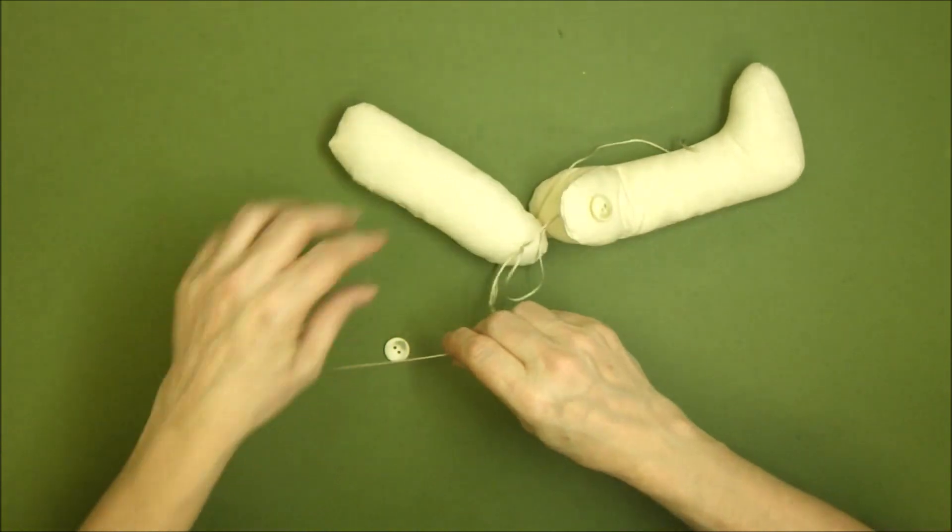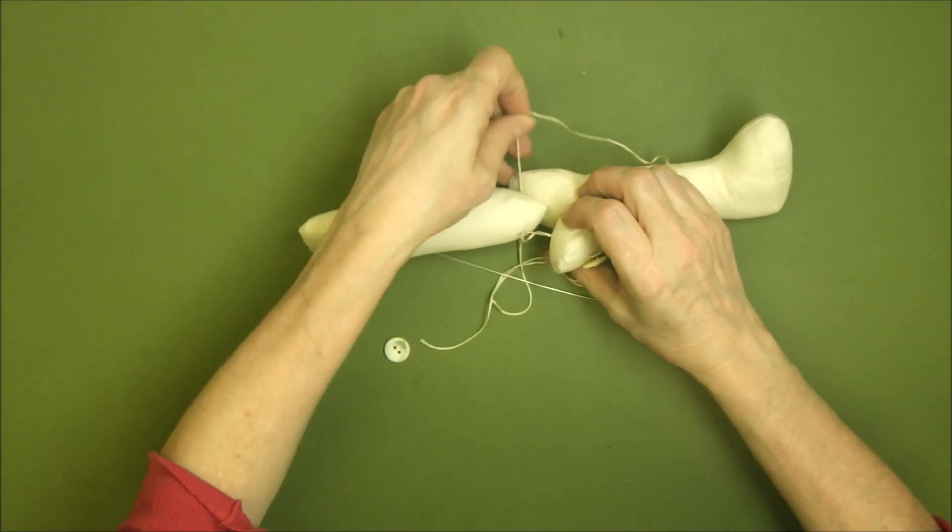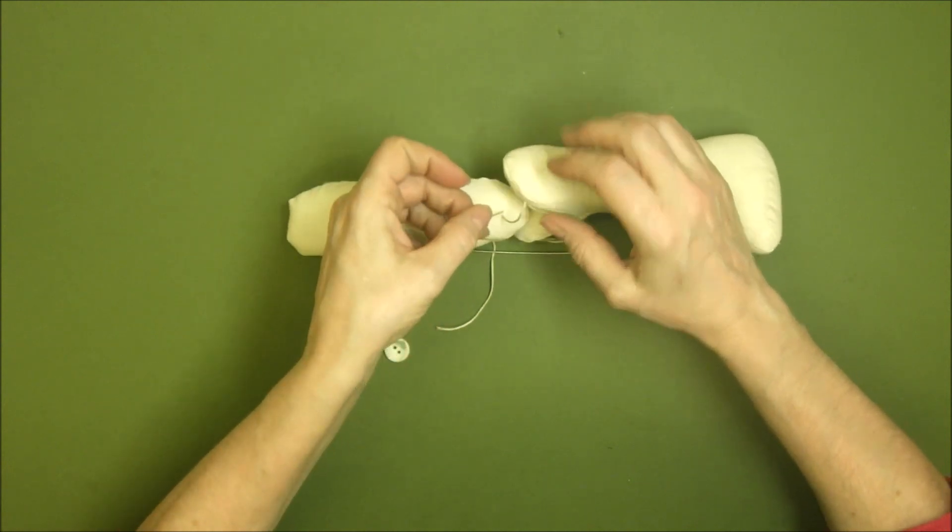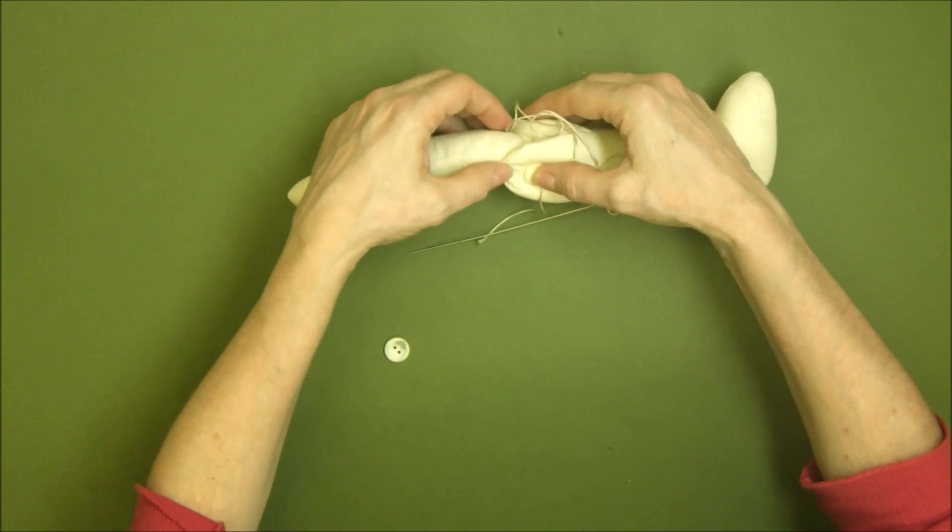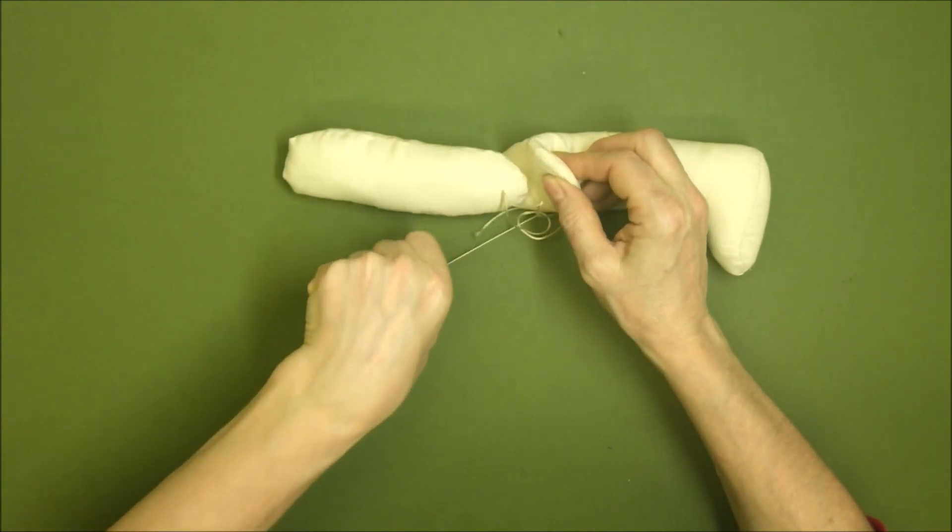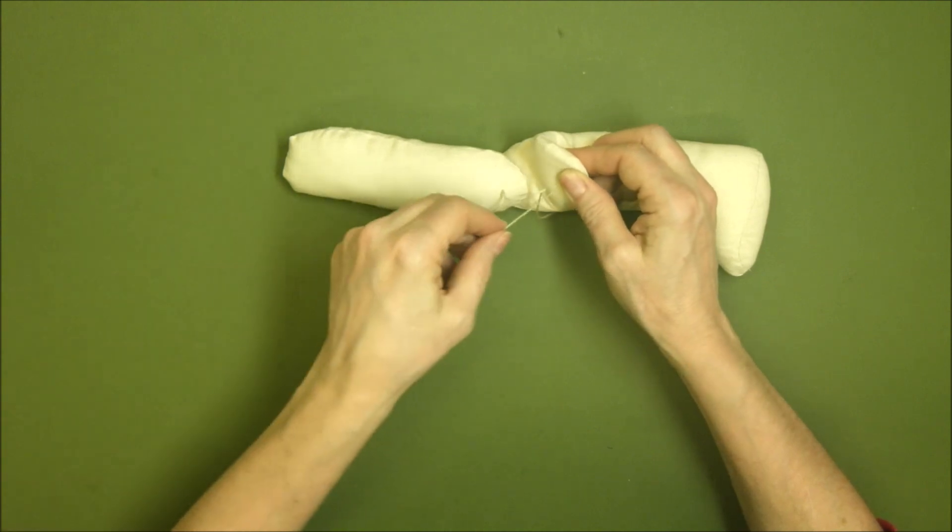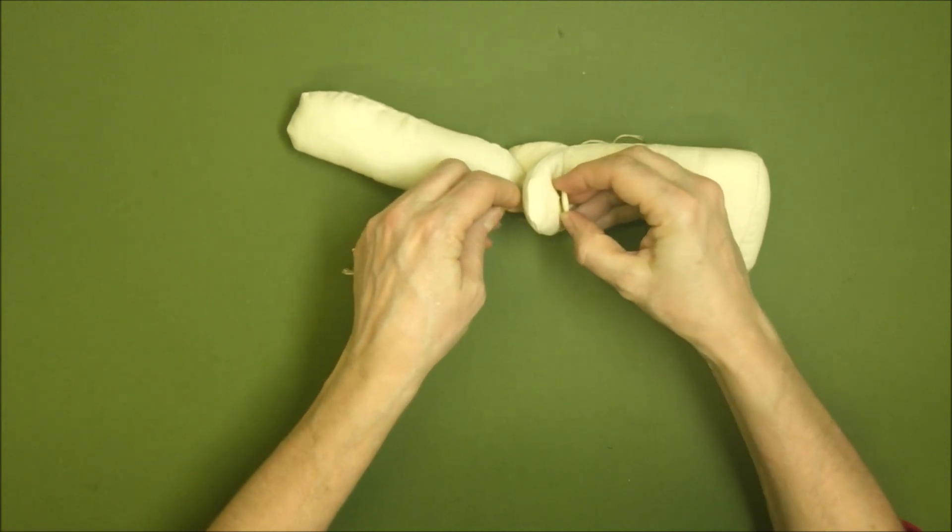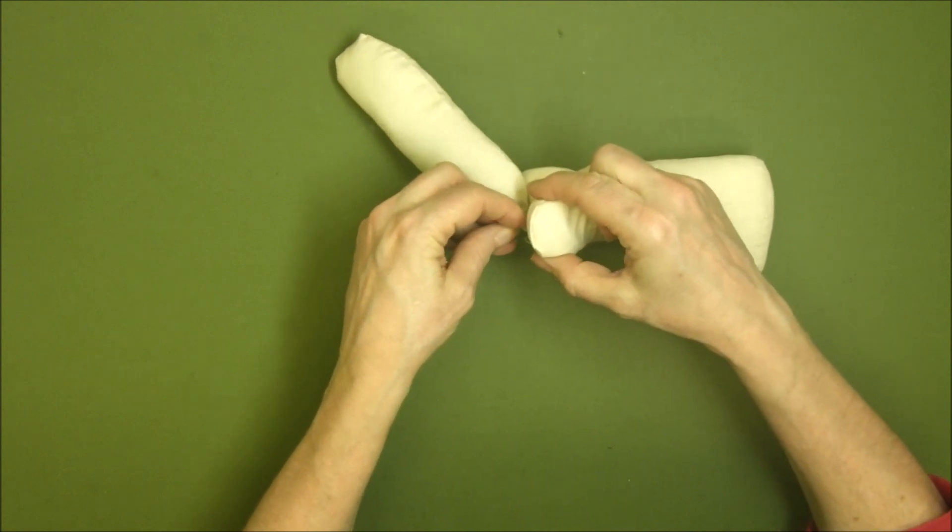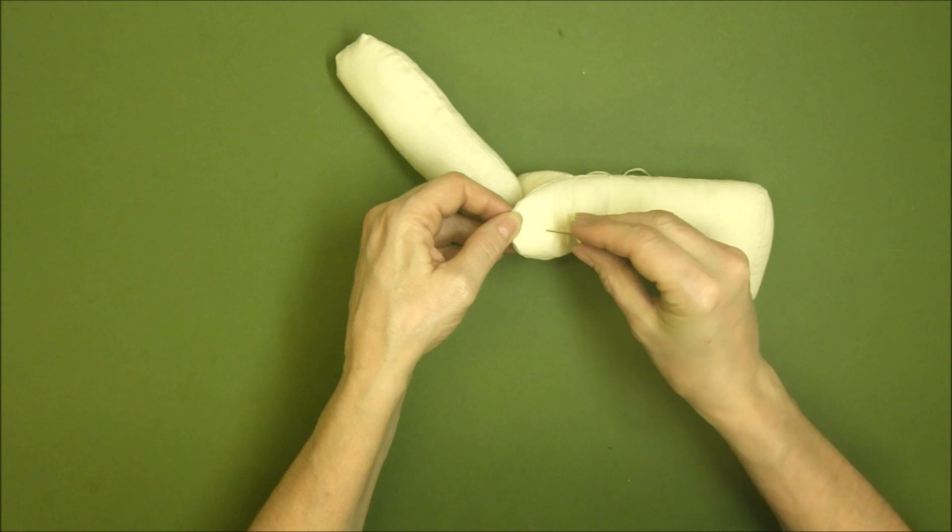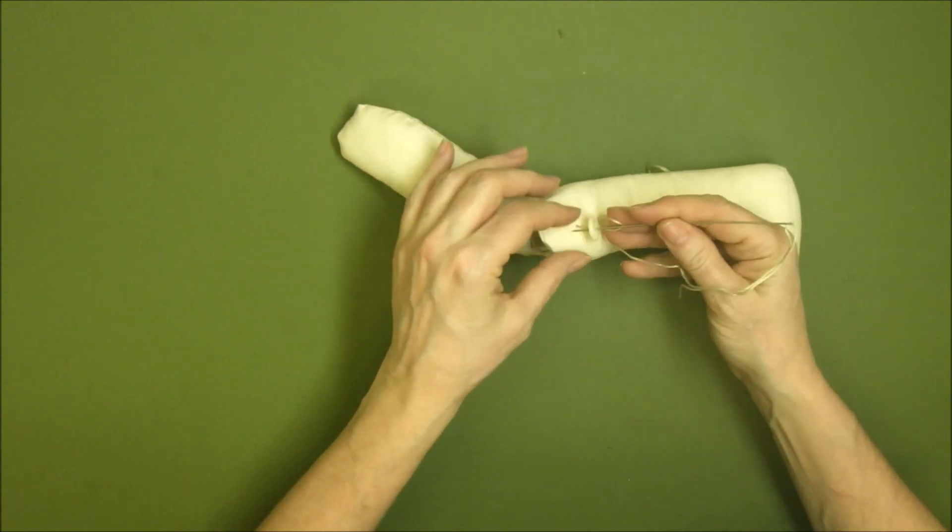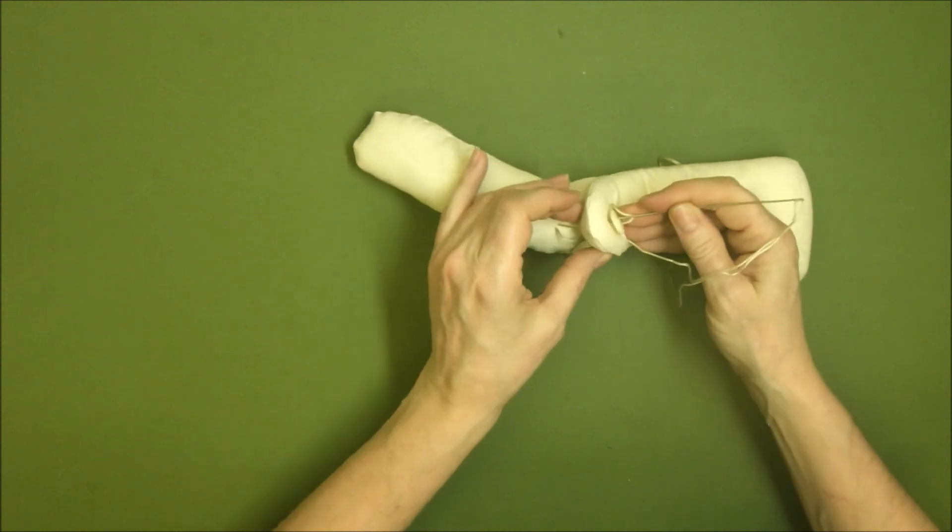We're going to do the other side, so again we're going to pull that nice and tight so there are no loops. This is where our button is going to sit. We're going to go through from the inside to the outside like that, through one hole of our button, and then back through the other hole of the button and just a few millimeters away from the original thread. Pull it through, get the tail back to where you started.